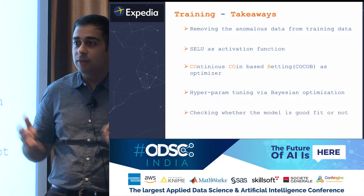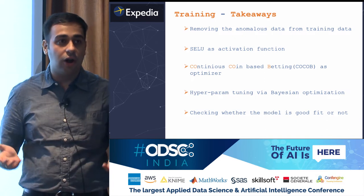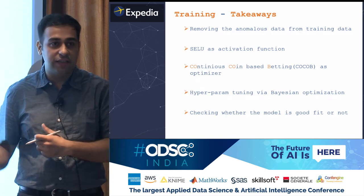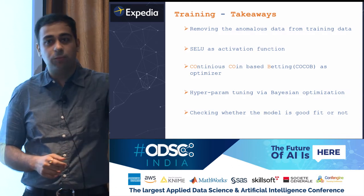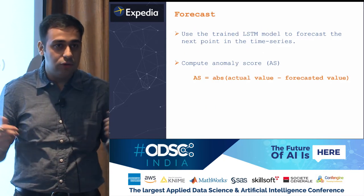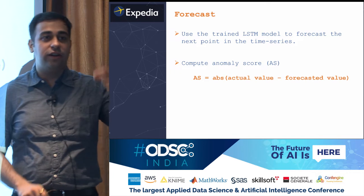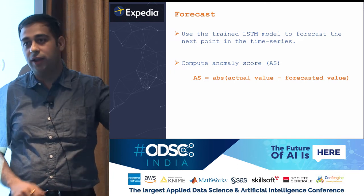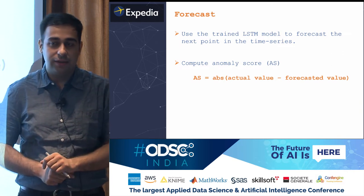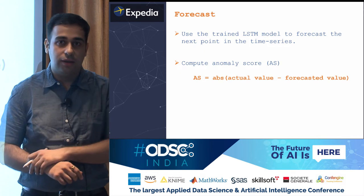Finally, we check whether the deployed model is a good fit against the validation dataset. If not, a retraining is automatically triggered. Now that we have a model trained and deployed in SageMaker, we use it to forecast the next point in the time series. We compare the forecasted value with the actual value to compute an anomaly score — the absolute difference between the actual value and the forecasted value. This anomaly score is key to determining whether the actual value is anomalous.